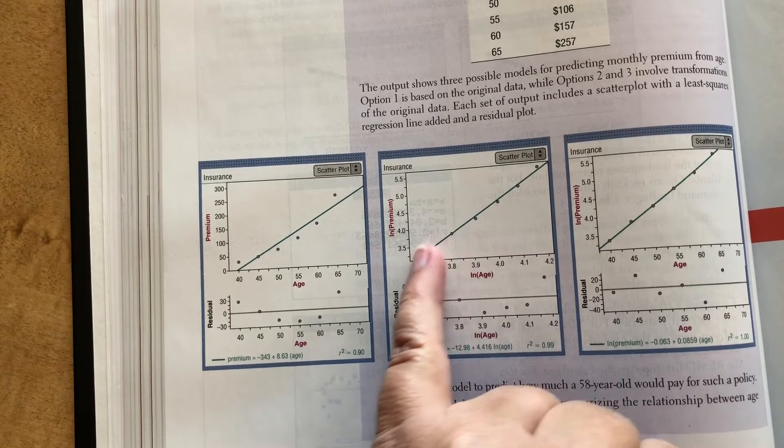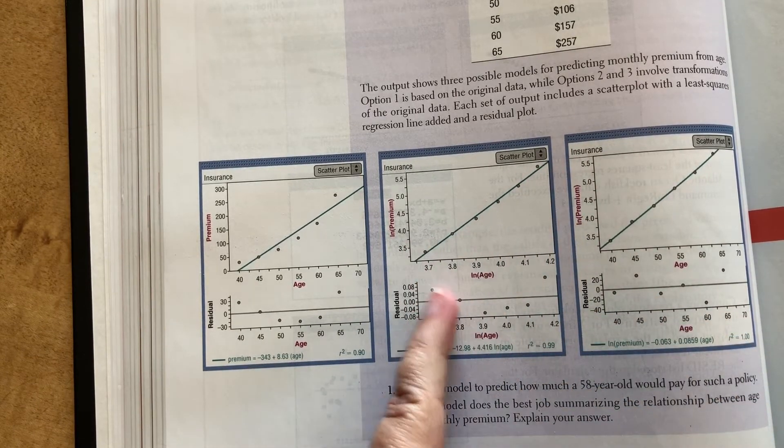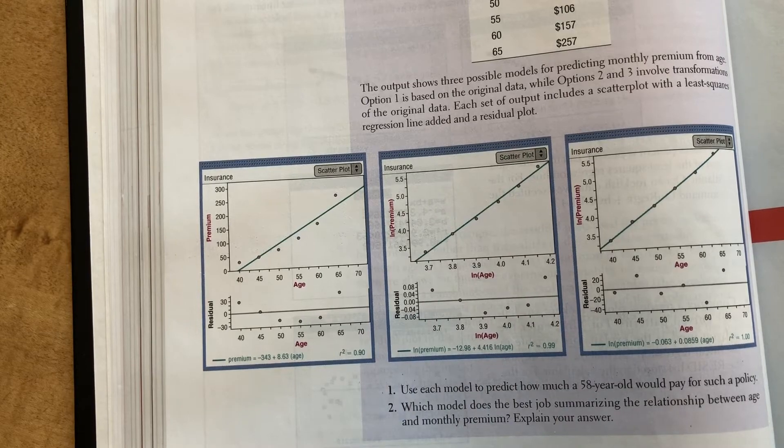You can see the observations got much straighter. I still see a little curve, but they're definitely much straighter. Residual still looks a little curved.